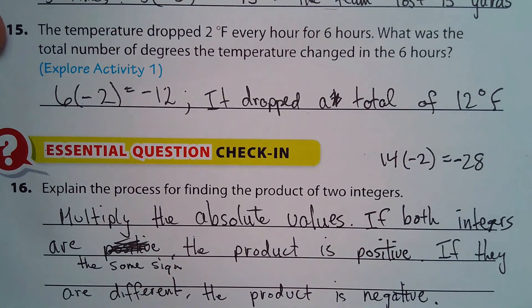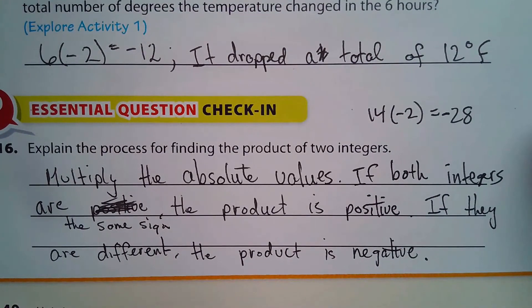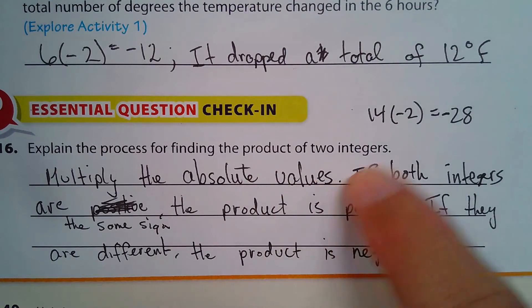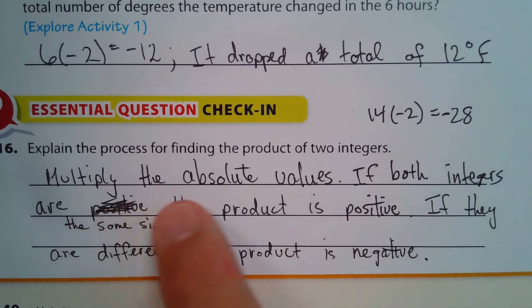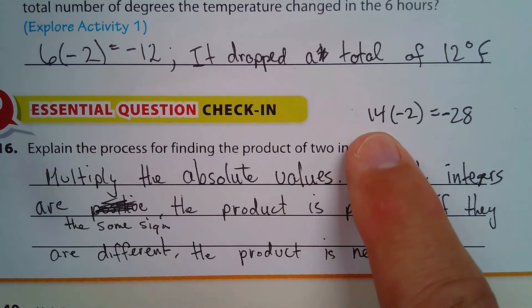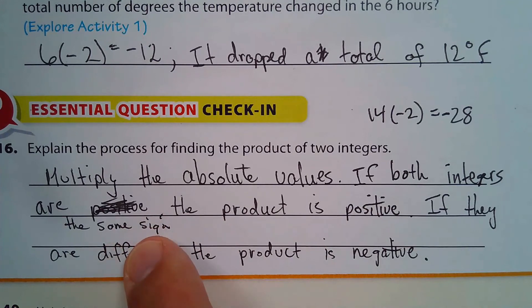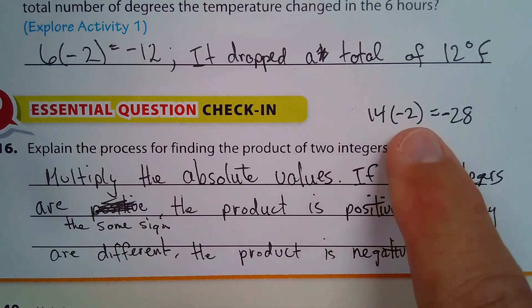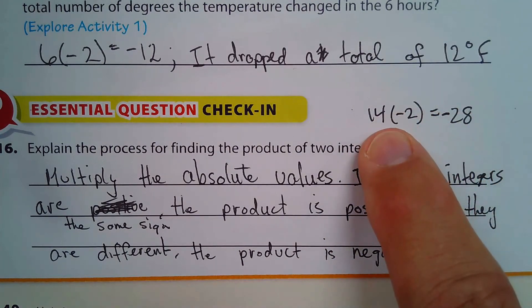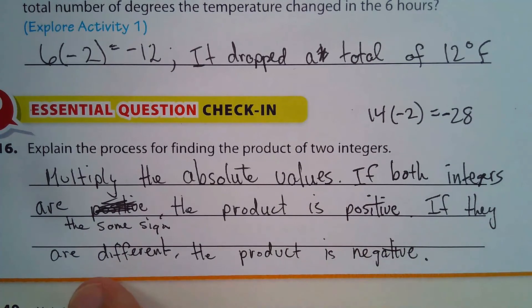And our check-in: explain the process of finding the product of two integers. So when you're multiplying two integers, such as 14 times negative 2, that's negative 28. You would multiply the absolute values, so 14 times 2 is 28. If both integers are the same sign, the product is positive. So if you have 14 times 2, that's 28. If you have negative 14 times negative 2, that's positive 28. If the signs are different, the product is negative.